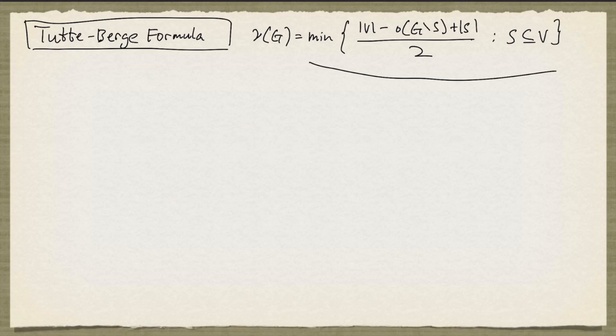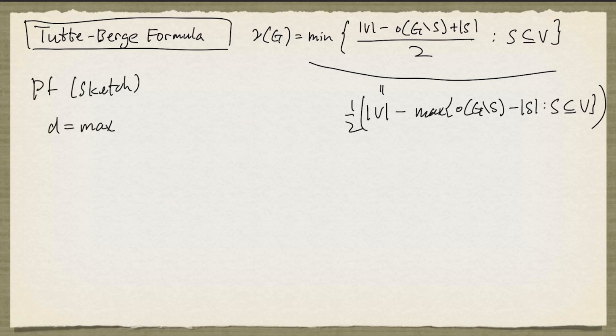Now first, we can rewrite this as one half times the number of nodes minus the maximum of the number of odd components in G drop S minus the cardinality of S over all subsets of nodes S. And we'll let D denote this maximum.